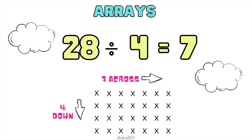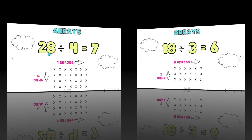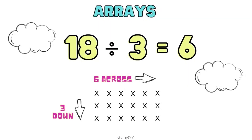Let's look at another example: 28 divided by 4 equals 7. The divisor lets you know how many groups — 7 lets you know how many in each group, and remember we need a total of 28. Next, 18 divided by 3 equals 6. You have 3 groups, 6 in each group, which gives us a total of 18.